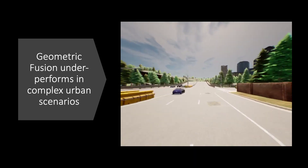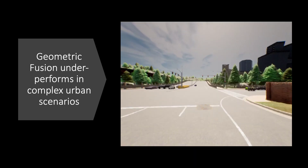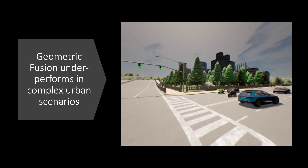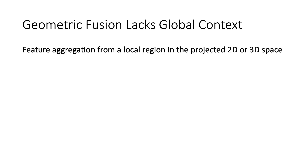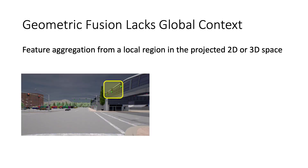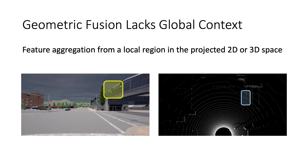This is another example of a complex scenario involving multiple vehicles, pedestrians, and cyclists. We hypothesize that this happens due to the lack of global context, since the features are aggregated from a local region in the projected 2D or 3D space. In the illustration shown here, for the traffic light region in the image, geometric fusion aggregates features from the blue region in the point cloud, since these points project to the yellow region in the image space. However, to safely navigate the intersection, it is essential to aggregate features from the red region in the point cloud, since it overlaps with the vehicles moving from left to the right.